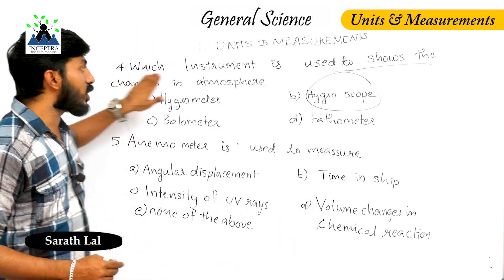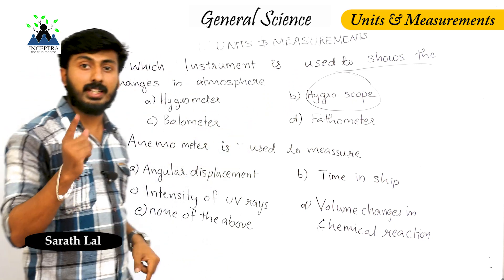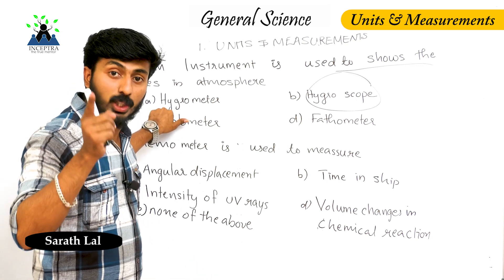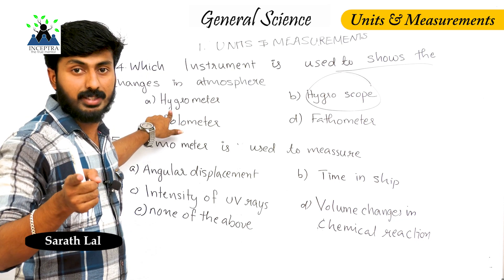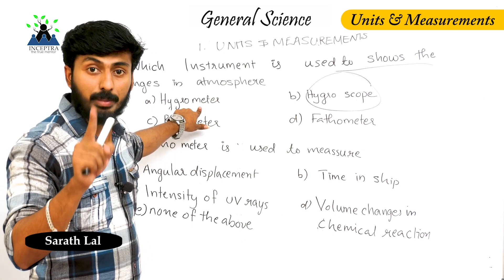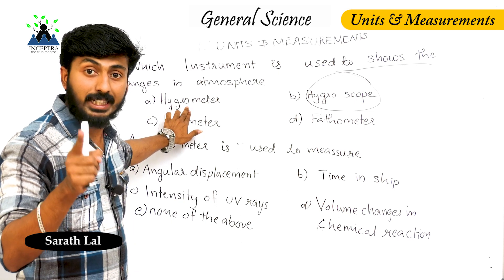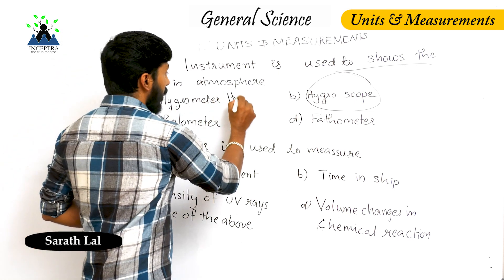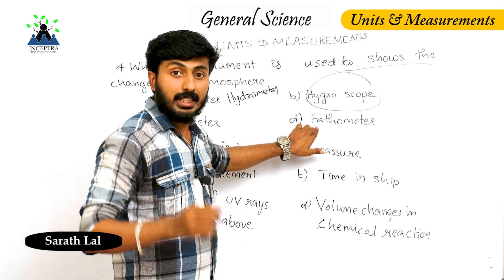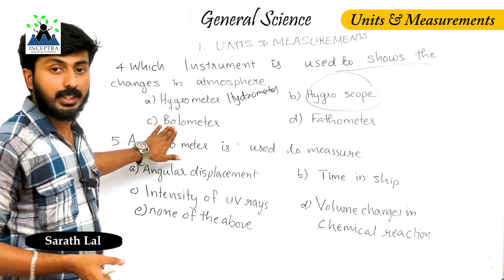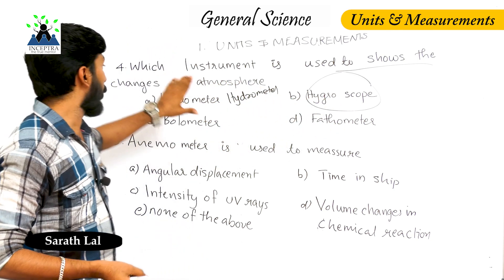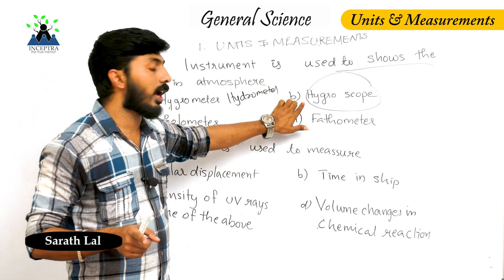Next question: which instrument is used to show changes in the atmosphere? Hygrometer measures humidity. Hydrometer measures relative density. About atmosphere changes, the device is a hygroscope.